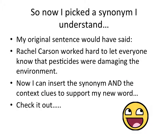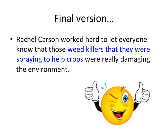Let's see how I could change my writing to include one of them. My original sentence said: "Rachel Carson worked hard to let everyone know that pesticides were damaging the environment." I want to insert a synonym and context clues to support my new word. Here's my final product: "Rachel Carson worked hard to let everyone know that those weed killers that they were spraying to help crops were really damaging the environment." Not only did I include weed killers, I also included the definition for my new word. I could have also used insecticide or DDT — I chose weed killers because it was a more basic word. And I would highlight it to get credit as one of my six.